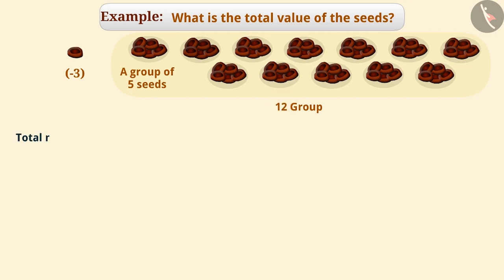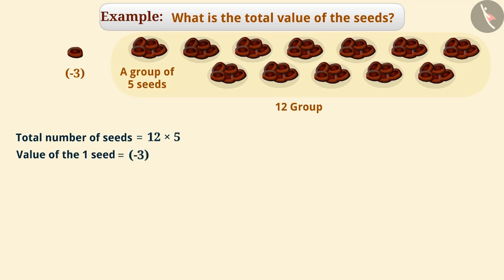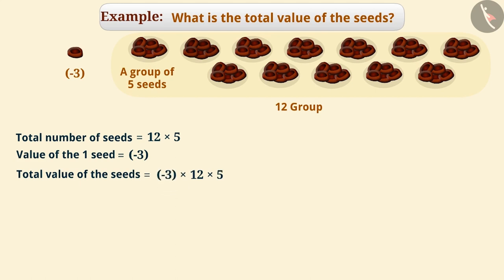The total number of seeds can be found by finding the value of 12 multiplied by 5. The value of each seed is minus 3. To find the total value of the seeds, we need to multiply 12 multiplied by 5 with minus 3.